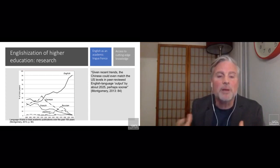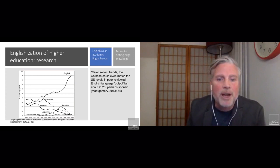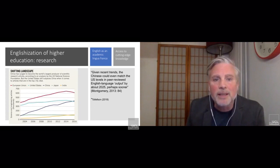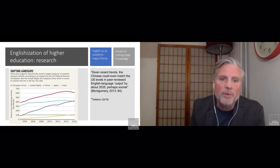In 2013, Montgomery said that given recent trends, the Chinese could even match the U.S. levels in peer-reviewed English language output by about 2025, and perhaps sooner. It is important to note that a lot of the drive of English language publications is actually from China. Interestingly, this happened in 2018, and Tollefson wrote about this in Nature—this idea of a shifting landscape where China surged to become the world's largest producer of scientific research articles.